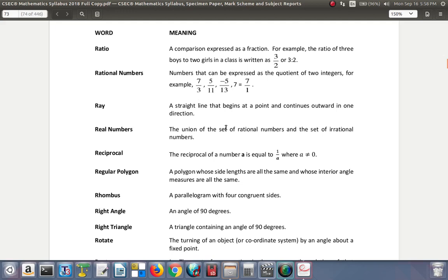Ratio. A comparison expressed as a fraction. For example, the ratio of 3 boys to 2 girls in a class is 3 to 2, or written this way, 3 over 2, or 3 colon 2. Rational Numbers. Numbers that can be expressed as the quotient of two integers. For example, 7 over 3, 5 over 11, negative 5 over 13, 7 which is the same as 7 over 1. So those are rational numbers. You can write them as a whole number over another whole number.